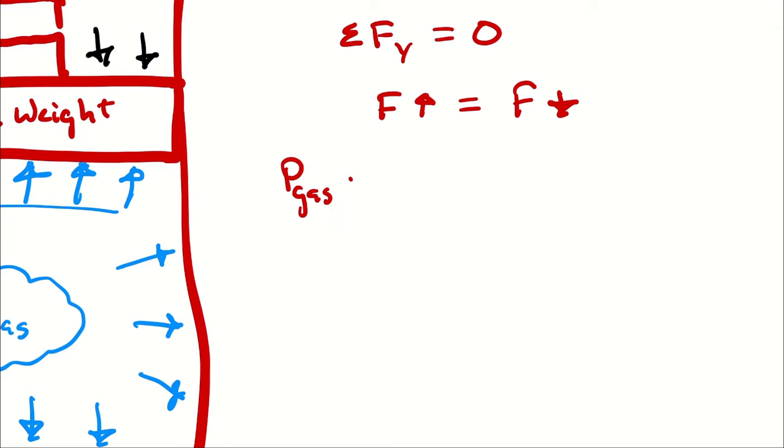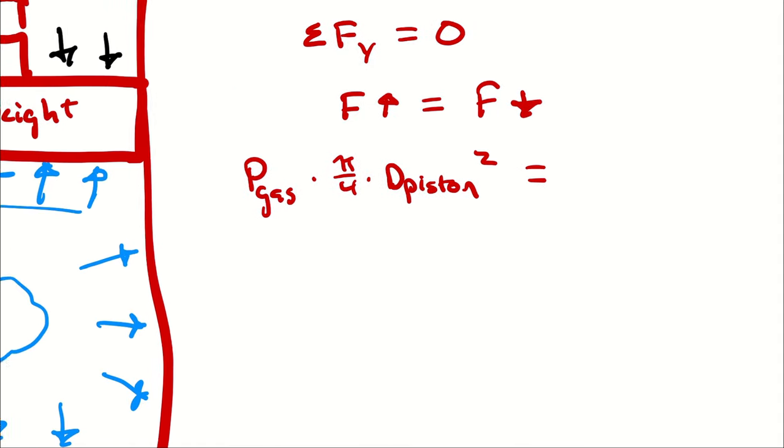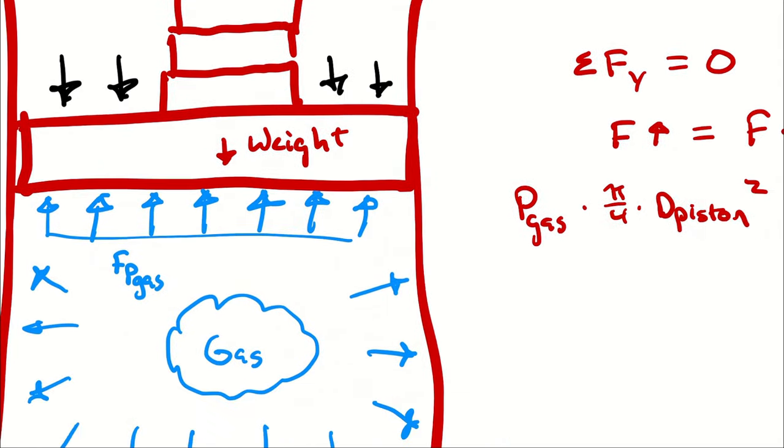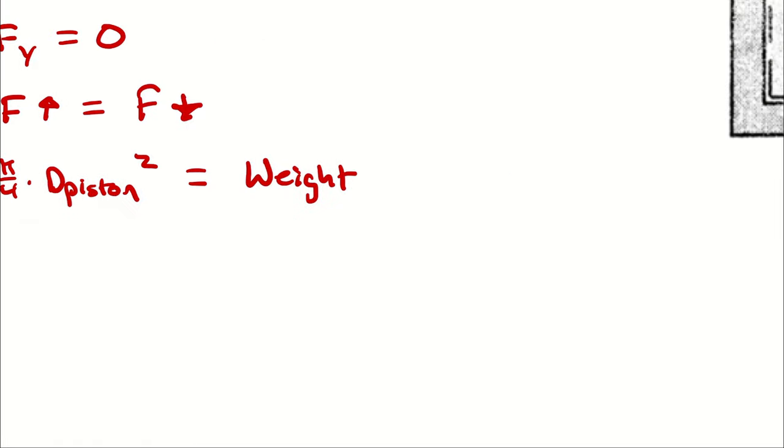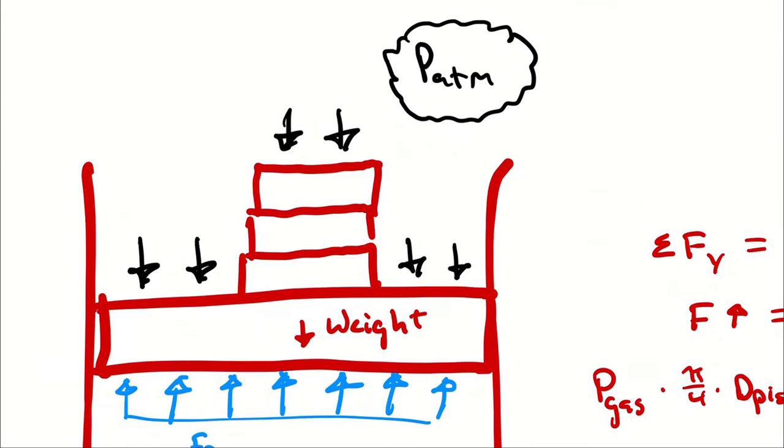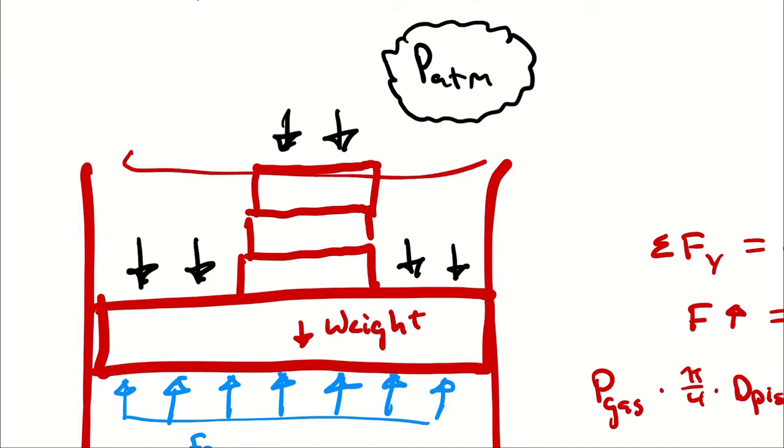So the force exerted by the pressure of the gas is going to be pressure of the gas times the area of the piston, which again is pi over 4 times the diameter of the piston squared, and that is equal to the weight of the weights and the piston, which I'm going to call weight, plus atmospheric pressure times the area of effect for the atmospheric pressure, which again is just going to be the top circle of the piston.